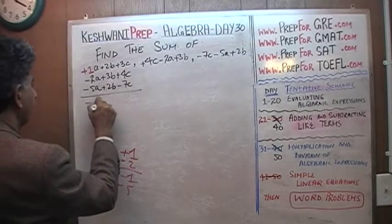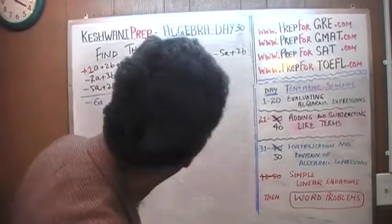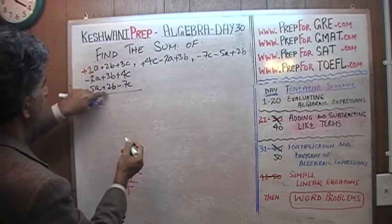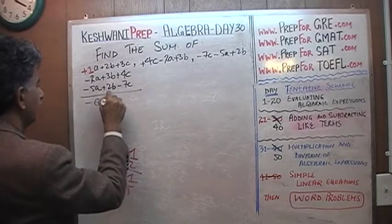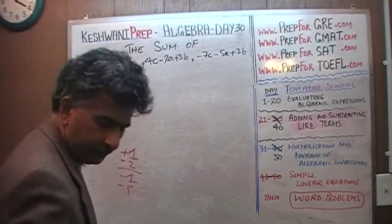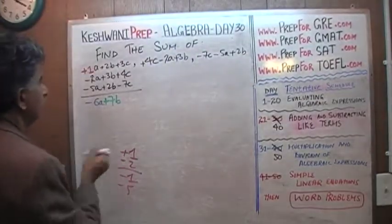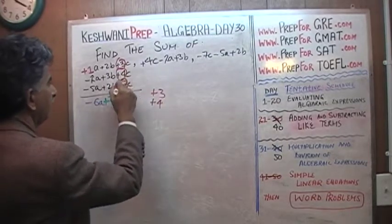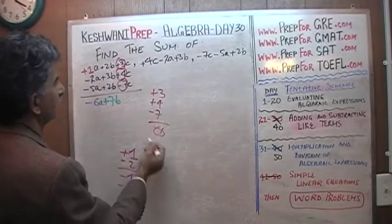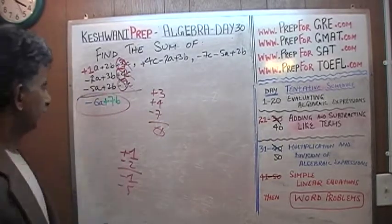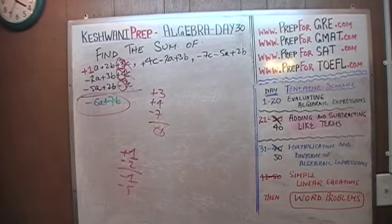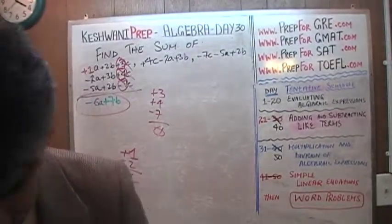We get negative 6a. Then for the b terms: positive 2, plus 3, plus 2 is 7 — so 7b. For the c terms: positive 3, positive 4, and negative 7 — the answer is 0, they cancel out. So the final answer is negative 6a plus 7b.